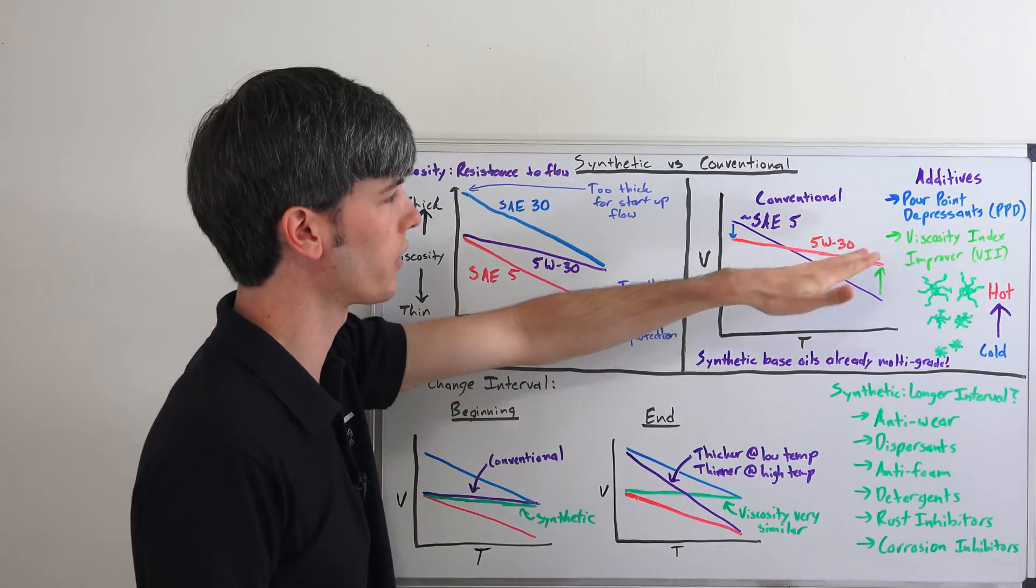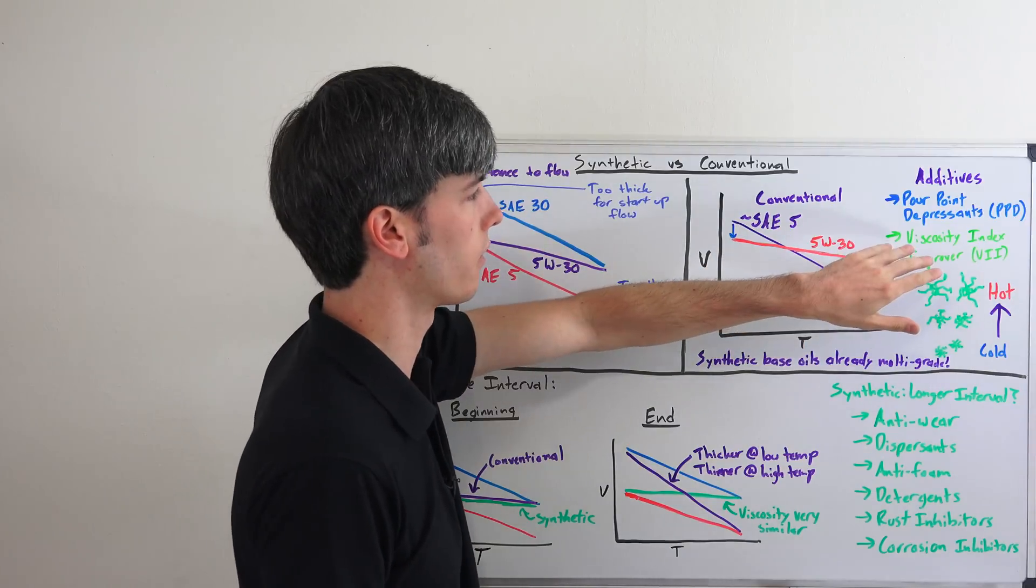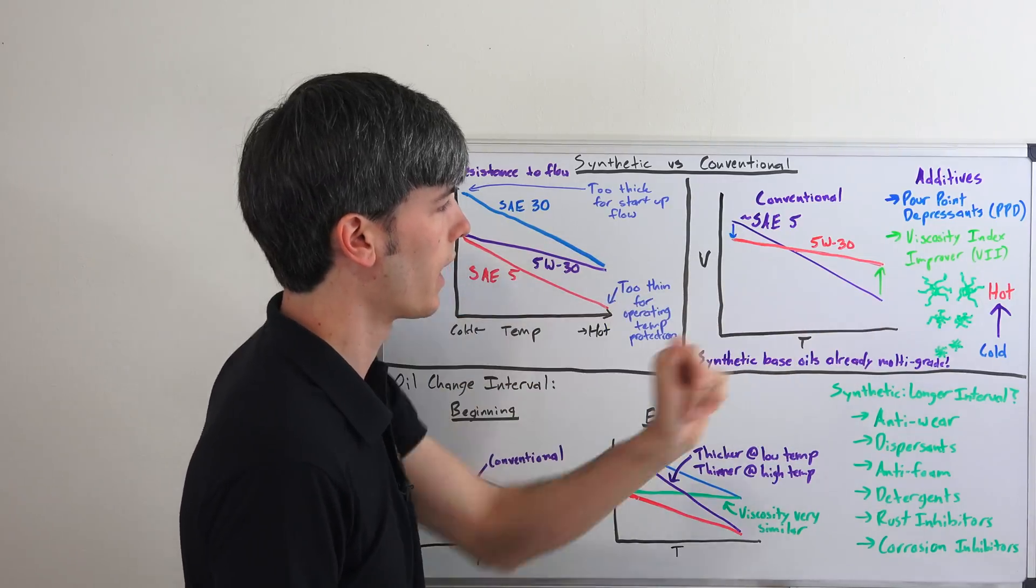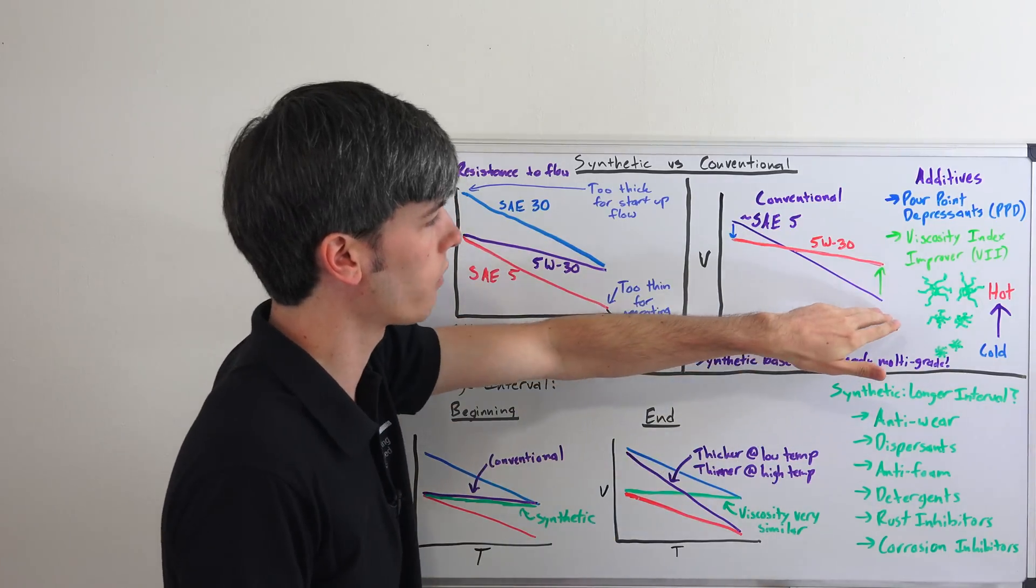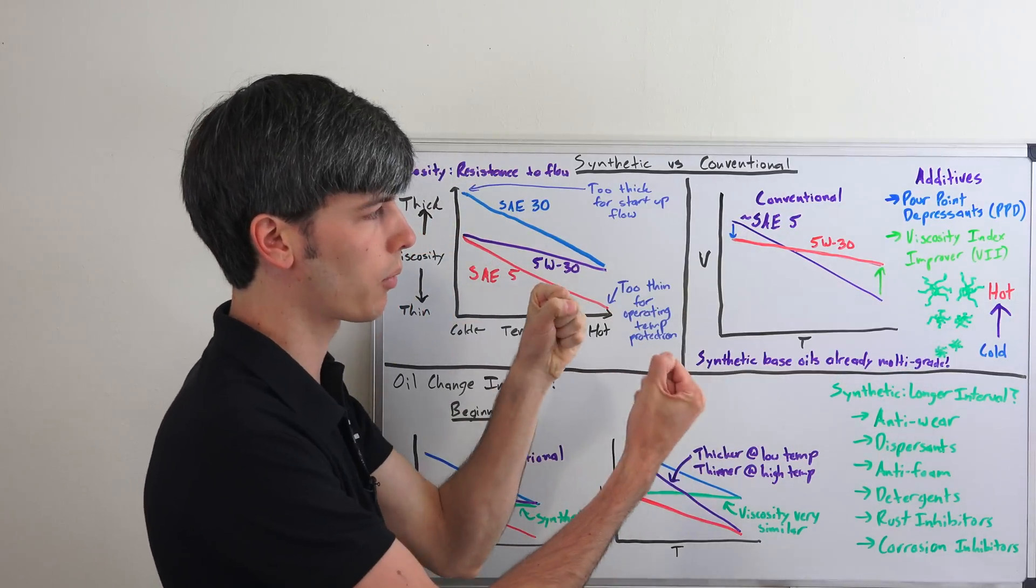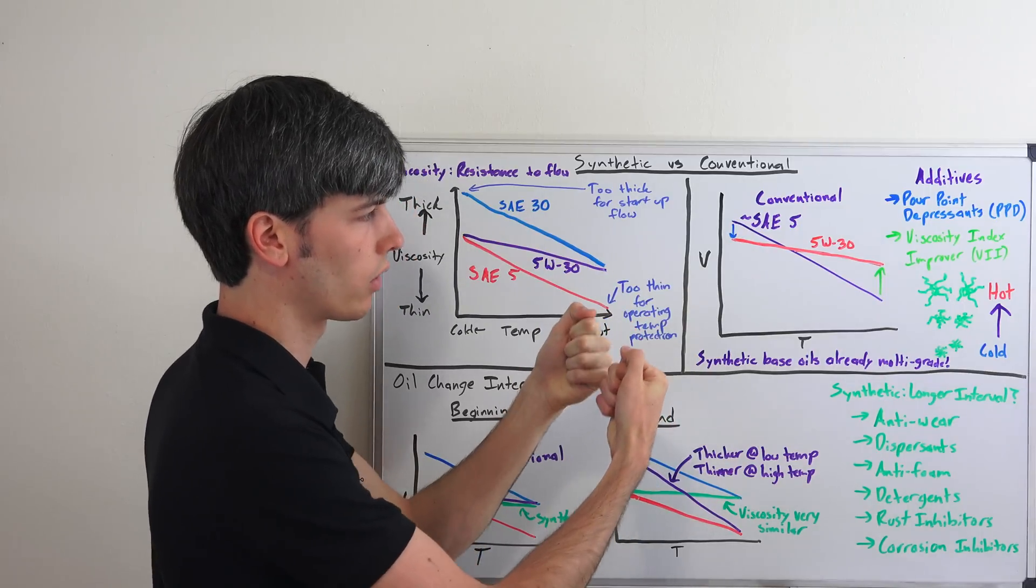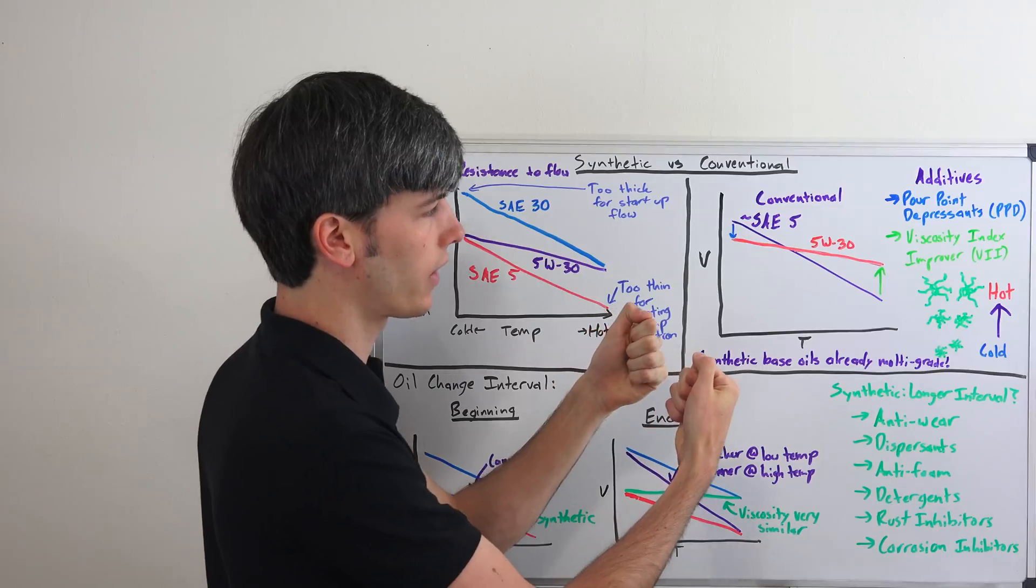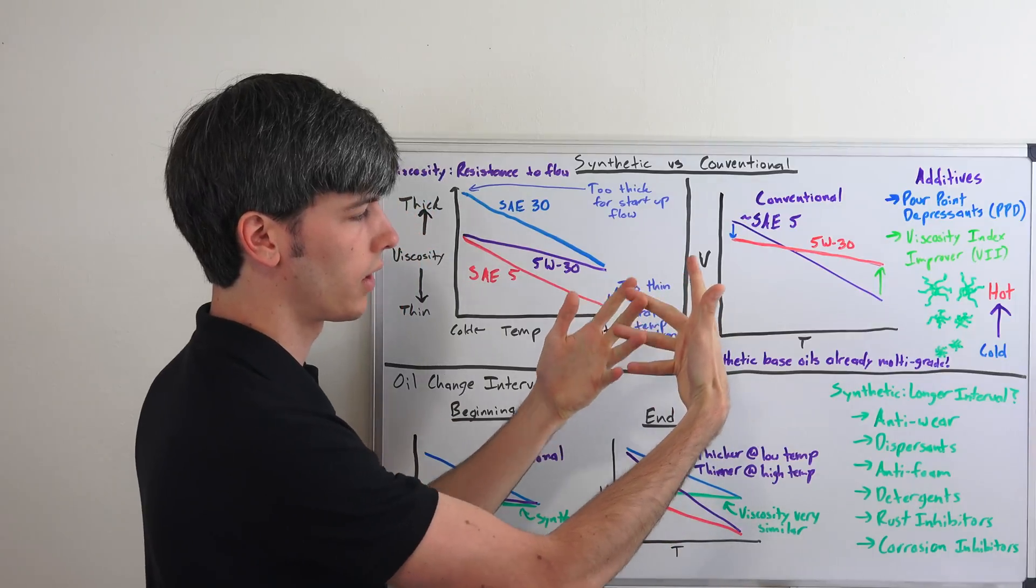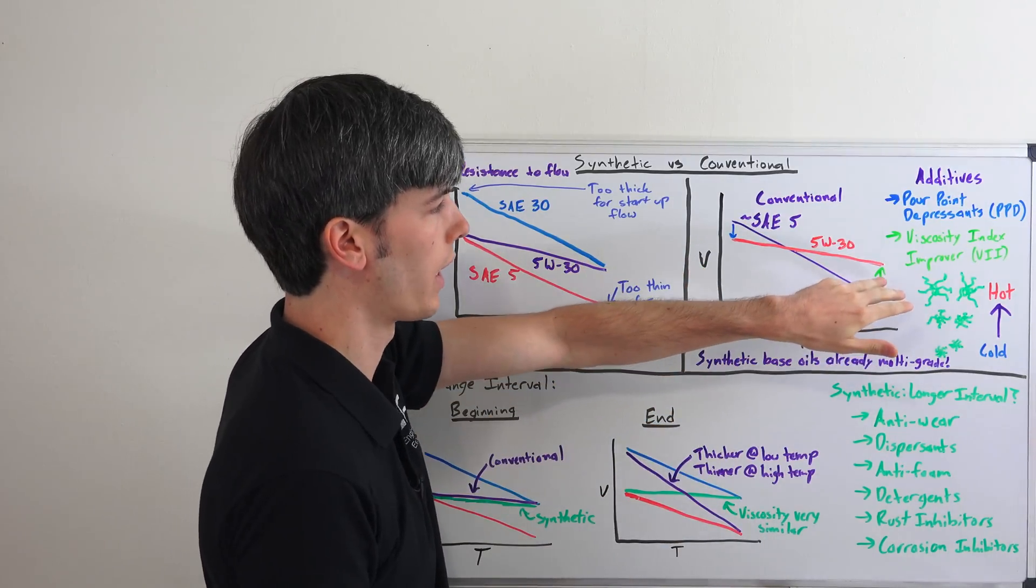So you can add pour point depressants and what these will do is lower the viscosity at low temperatures and then you can add viscosity index improvers and what these will do is increase the viscosity at high temperatures. And so kind of a way to think about how these viscosity index improvers work you've got these polymers that are all balled up when they're cold and so it's very easy for them to pass by one another so you know you're going to have a low viscosity and then as they heat up they expand out and so they get tangled more easily and so that increases the viscosity because it's less easy for them to pass by one another so you thicken the oil at high temperatures.